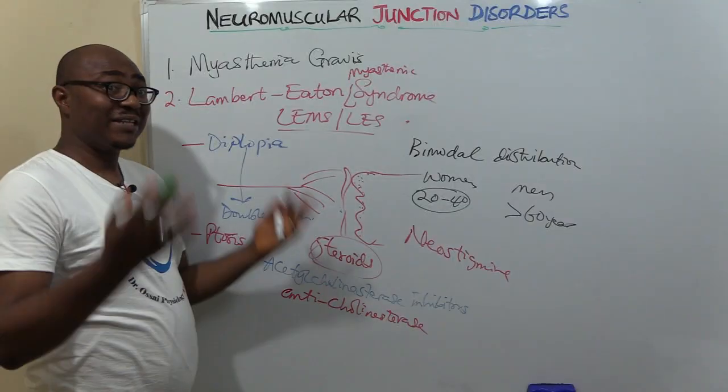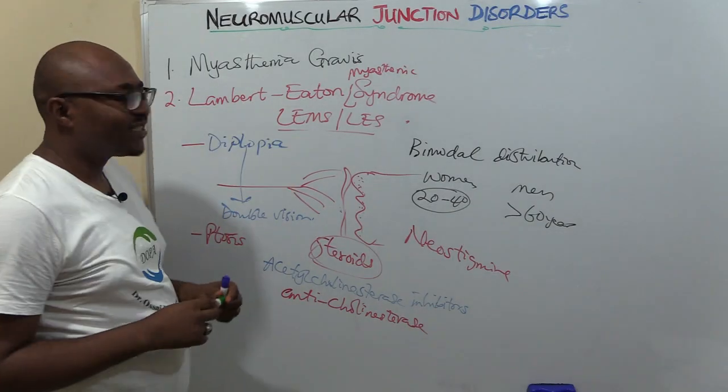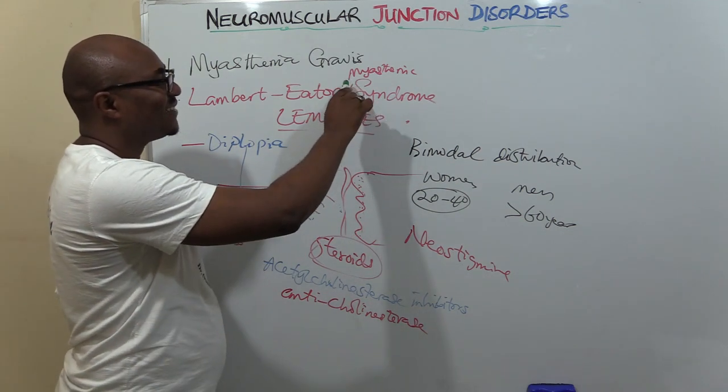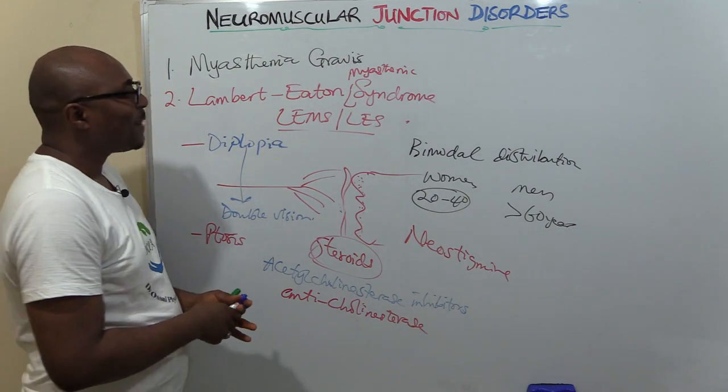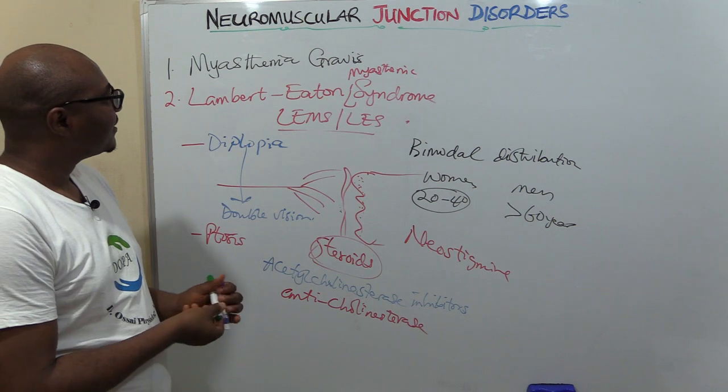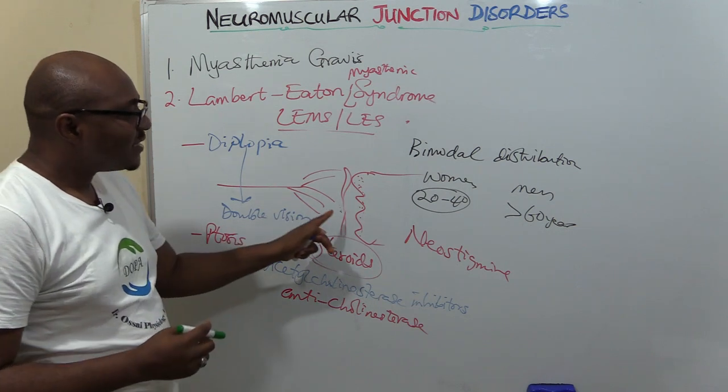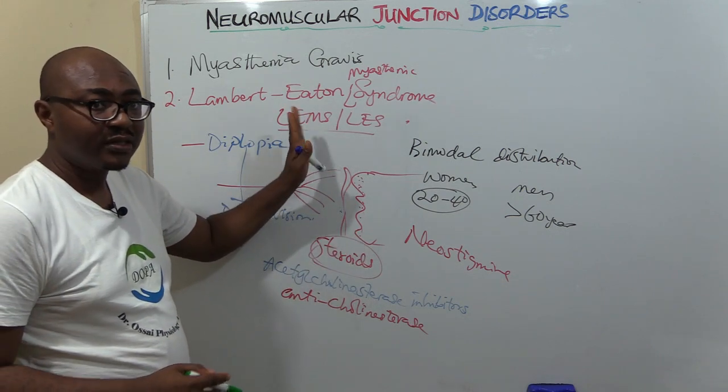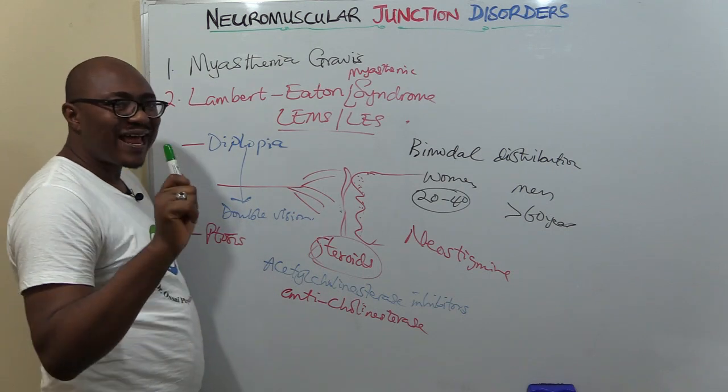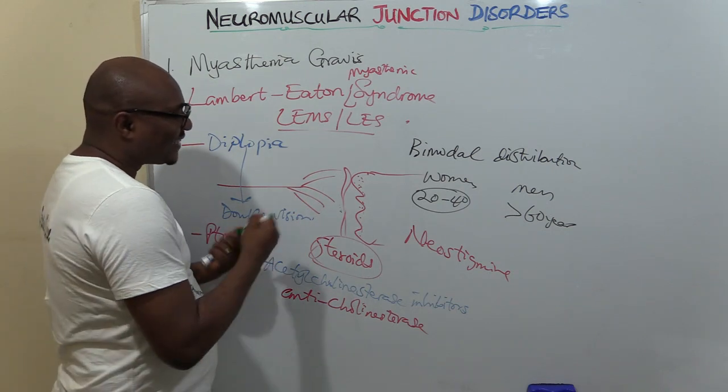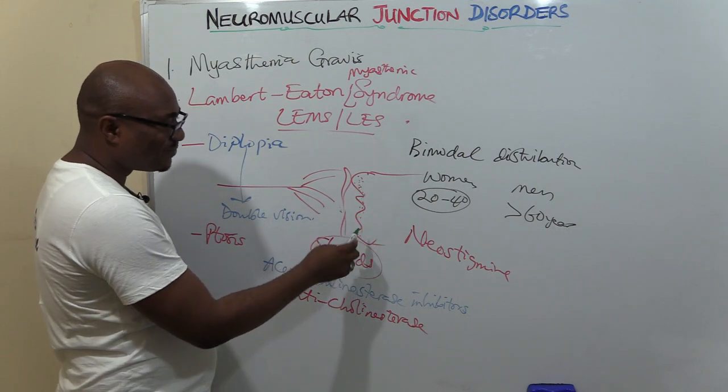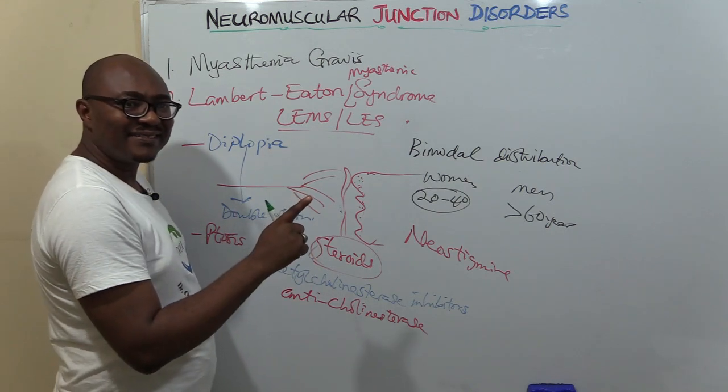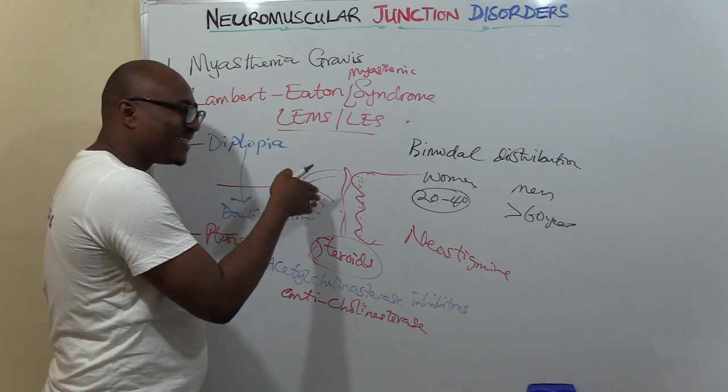Welcome back. Lambert-Eaton myasthenic syndrome also causes muscle weakness. Unlike Myasthenia Gravis, this is also autoimmune, but unlike Myasthenia Gravis that attacks the nicotinic receptors post-synaptically, Lambert-Eaton Syndrome attacks the presynaptic terminal.